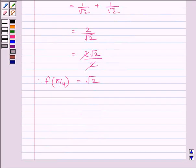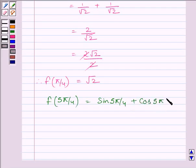Now let us find out value of the function at x equal to 5π upon 4. This is equal to sin 5π/4 plus cos 5π/4, which is equal to minus 1 upon root 2 plus minus 1 upon root 2.